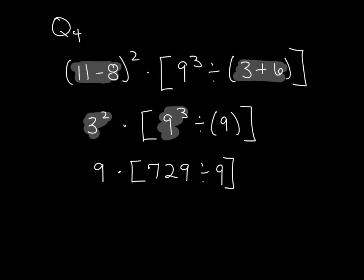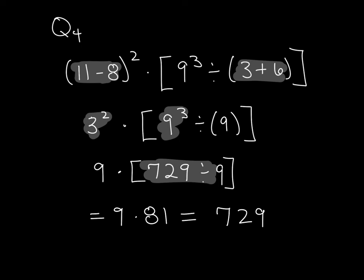I want to do inside my grouping symbol first. 729 divided by 9 is 81. So that leaves us with 9 times 81, which gives me back to what I had before. So my answer for question 4 is going to be 729.